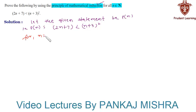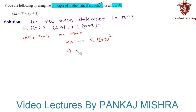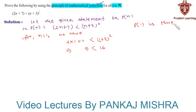For n equal to 1 we have 2 into 1 plus 7 is less than (1 plus 3) whole square. That is 2 plus 7 is 9, which is less than 4 squared, which is 16. Since 9 is less than 16, therefore P(1) is true.